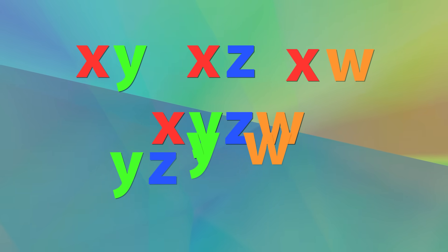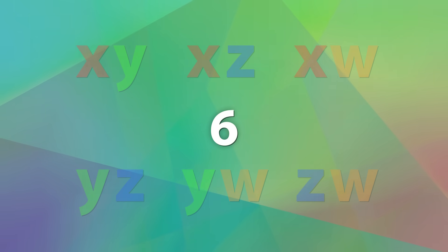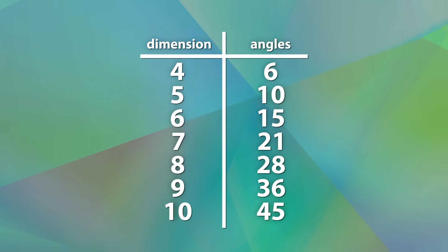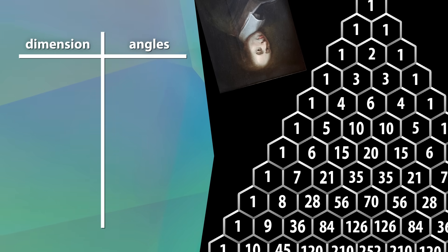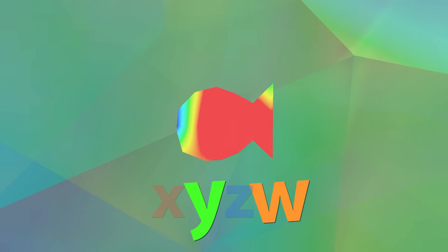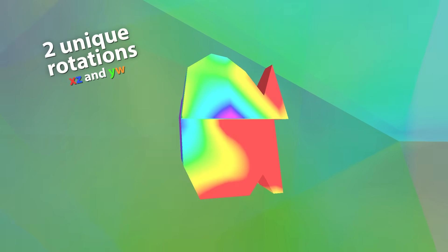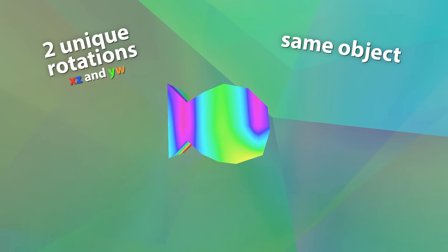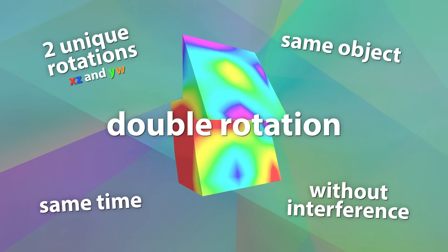By finding all the unique pairs of X, Y, Z, W, we can see that there are six different rotational planes. I actually figured out how to calculate how many rotational planes any dimension has, which made me feel like a genius — until I found out some French mathematician had already done that 400 years ago. Another thing to realize is that when we rotate in 4D, there are now two axes that aren't being used, which is enough for another rotation. So 4D has this unique property where we can perform two unique rotations to the same object at the same time without them interfering — which we call a double rotation.